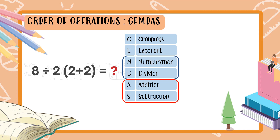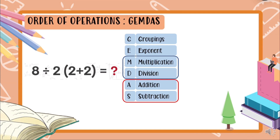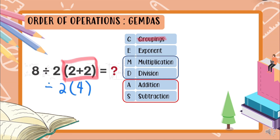Let us solve the problem. Following the order of operations, first is Groupings. We have groupings here — 2 plus 2 is inside parentheses. So we solve that first: 2 plus 2 equals 4. Then bring down everything else — the 2, the divided by, and the 8. Now we have 8 divided by 2 times 4.